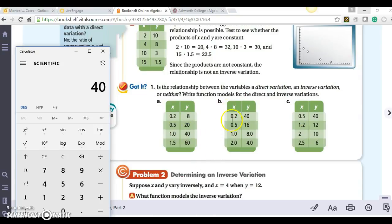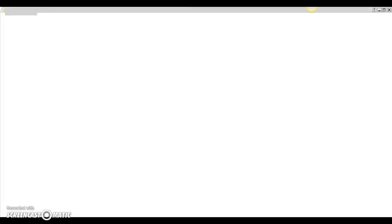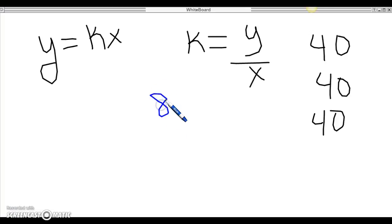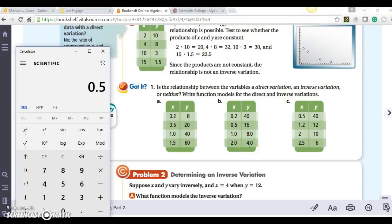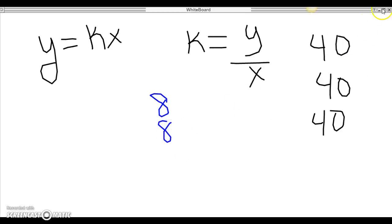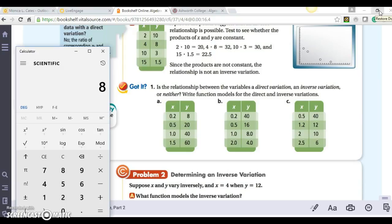Now let's look at part b. For my x values, they're increasing 0.2 to 0.5 to 1 to 2. For my y values, it's decreasing. So we can check for inverse variation. I'm going to multiply my numbers now and see if I get the same k value. 0.2 times 40 gives me 8, 0.5 times 16 gives me 8 again, 1 times 8 gives me 8, and 2 times 4 gives me 8. So they all equal 8.